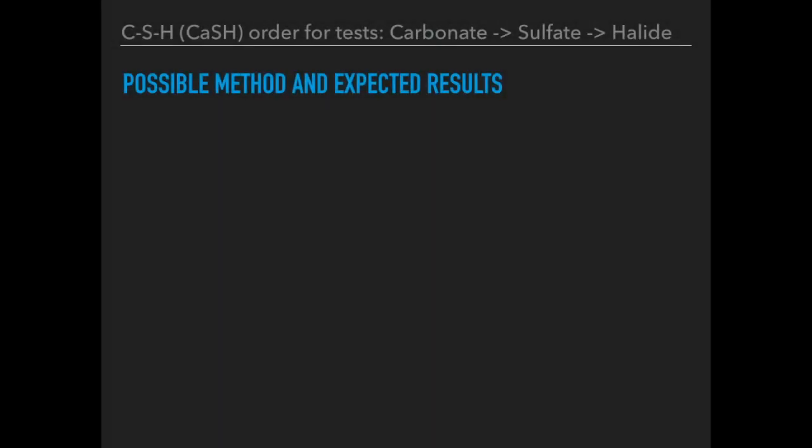At the very top of the slide is the CASH order — an easy way to remember the specific order these tests need to be carried out in. Carbonate has to come first, then sulphate, then halide. I will explain the reason for the order at the end of the video, but I'm going to use this order in my answer.